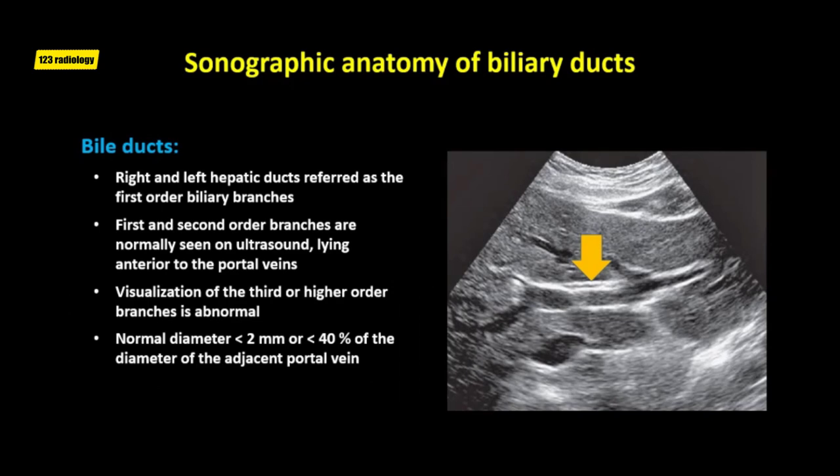The right and left hepatic ducts, also called the first-order biliary branches, are normally seen on ultrasound. The second-order branches can also normally be seen, lying anterior to the portal veins. However, visualization of the third or higher-order branches is abnormal. The normal diameter of the intrahepatic bile ducts proximal to the left and right hepatic ducts should be less than two millimeters, or less than 40 percent of the diameter of the adjacent portal vein.